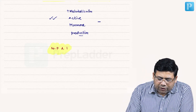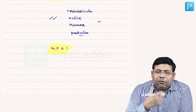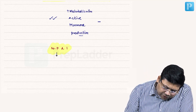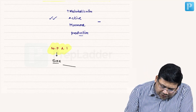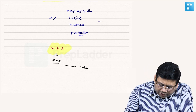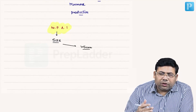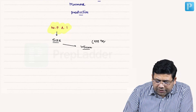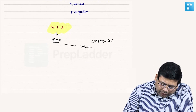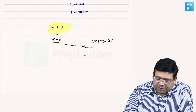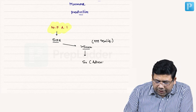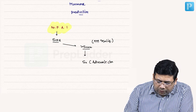How do we approach non-functional adrenal incidentaloma? One very important factor is tumor size. If the size is more than five centimeters, there is an increased risk of malignancy. We are not going to spare any adrenal mass in that scenario — you have to go for surgery, and the surgery we do is adrenalectomy.